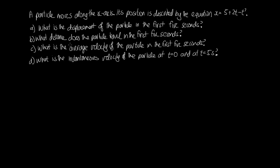To do part a, we'll need to use the equation that the total displacement delta x is equal to the final position minus the initial position. In order to work out what these are, we'll need to substitute into the expression for x, using time equals zero for the initial position and time equals five seconds for the final position.